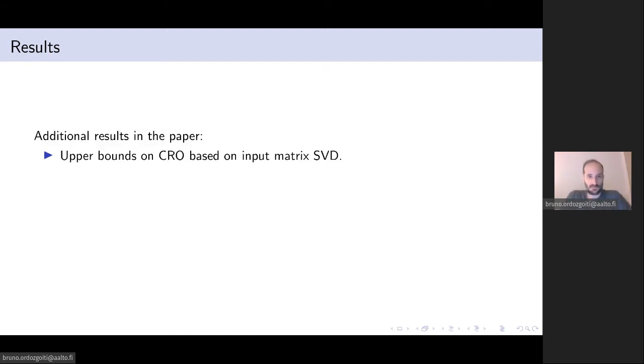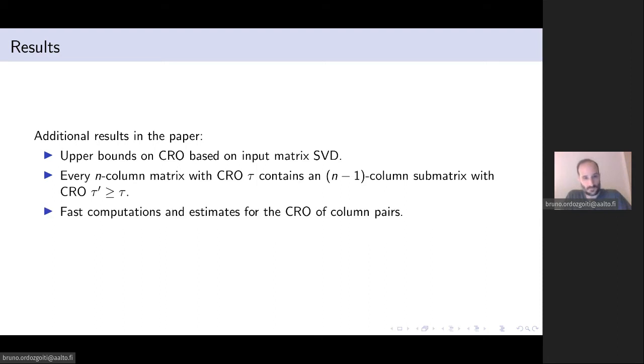We give additional results in the paper such as upper bounds on the CRO of the subsets of a matrix based on its singular value composition. We show that every n-column matrix with CRO tau contains an n-1 column matrix with at least the same CRO. That is, you can always remove one column without losing any CRO. We give some methods to compute and estimate the CRO of column pairs quickly. And we analyze the stability of the CRO measure against perturbations. In particular, we show that CRO is not very sensitive to noise and perturbations in the input matrix.